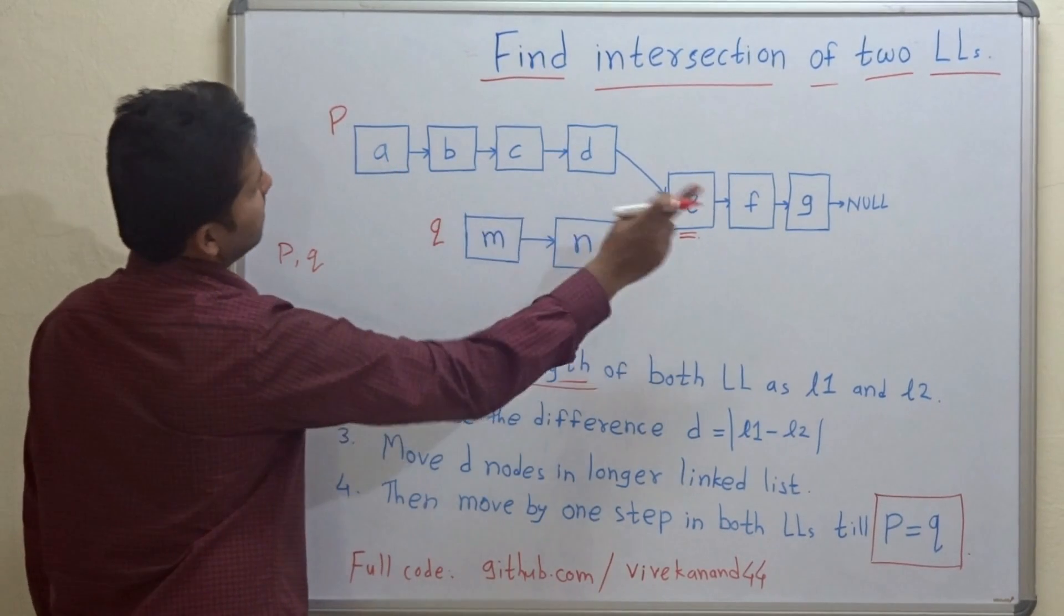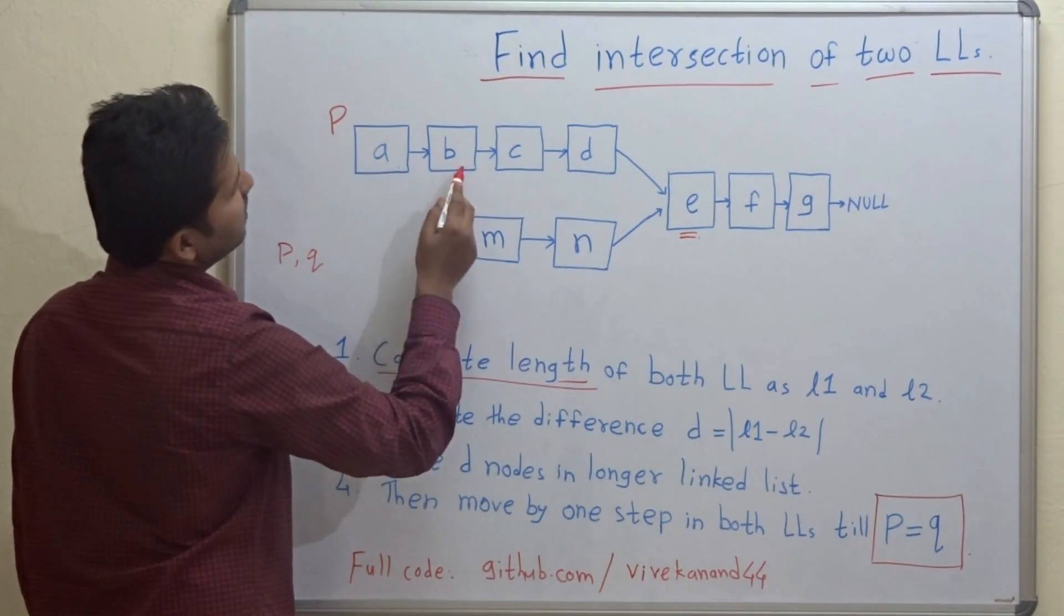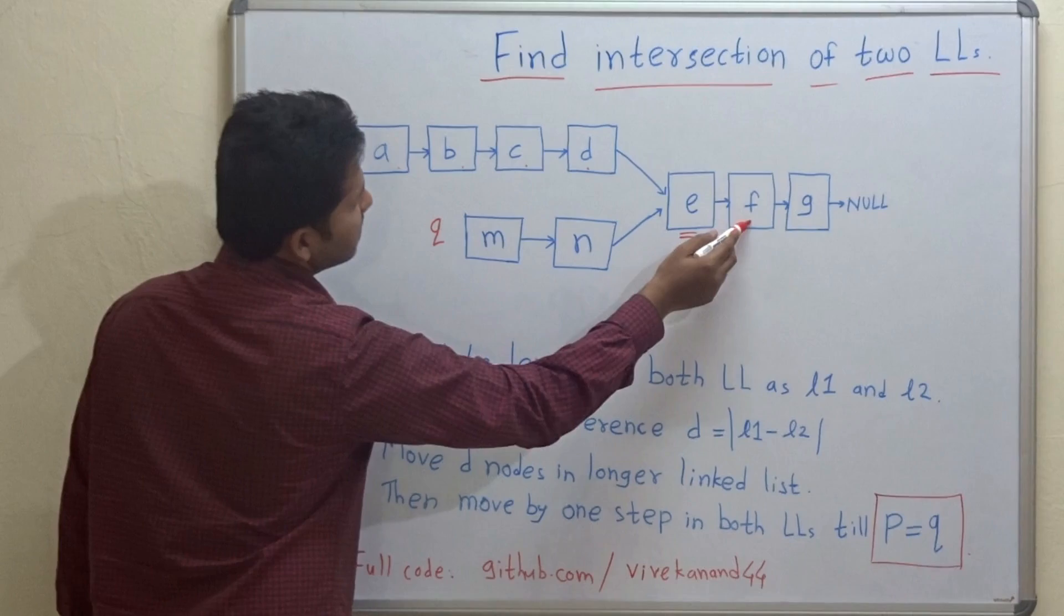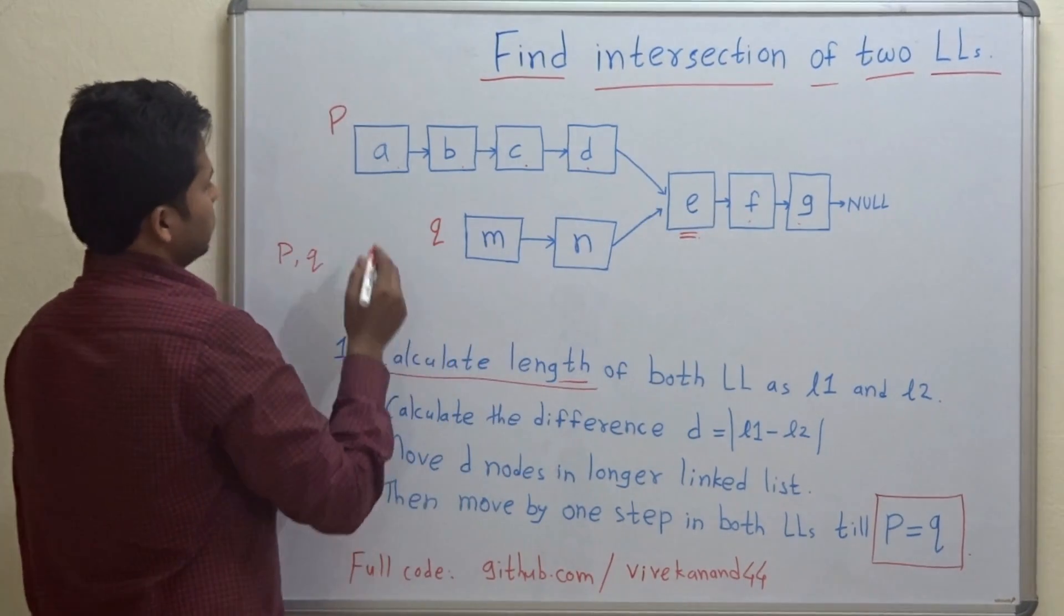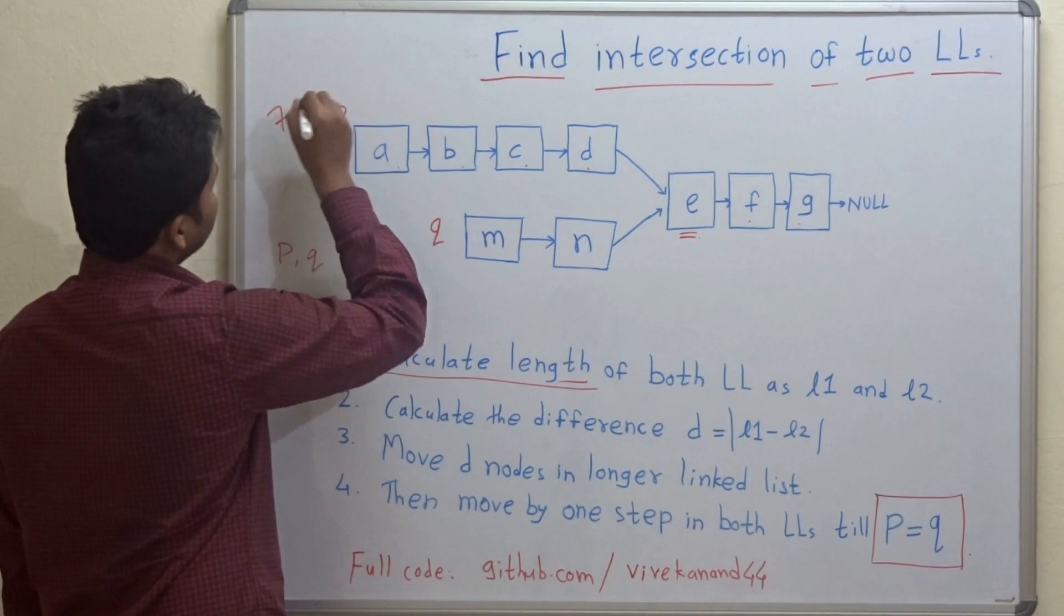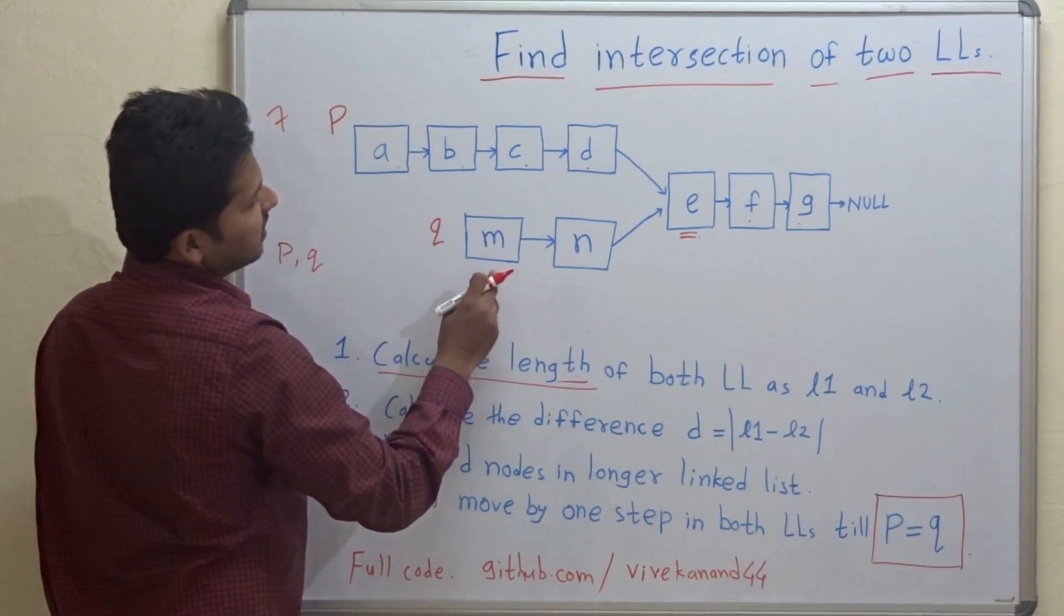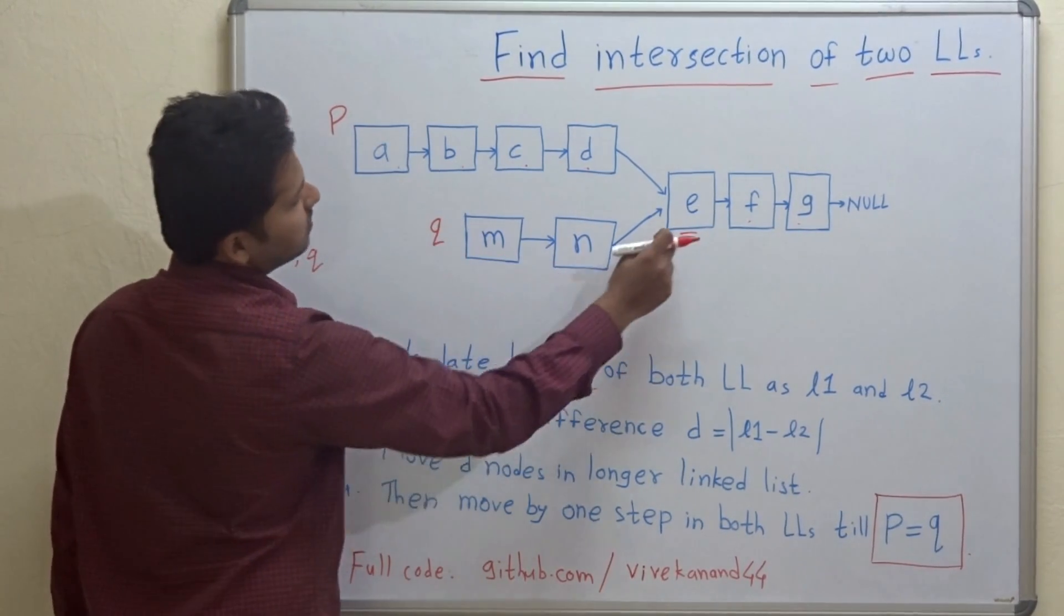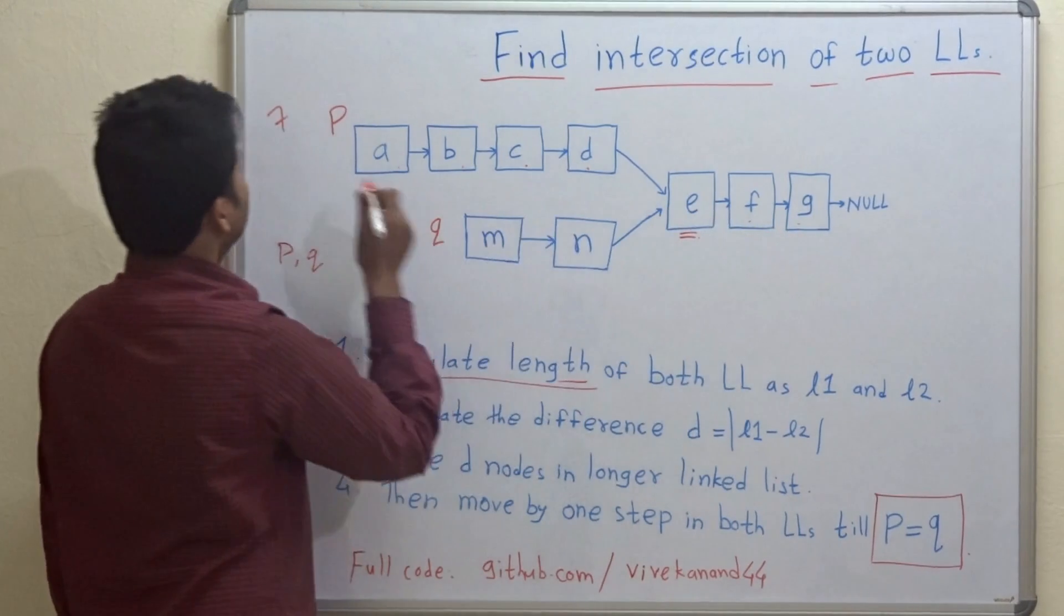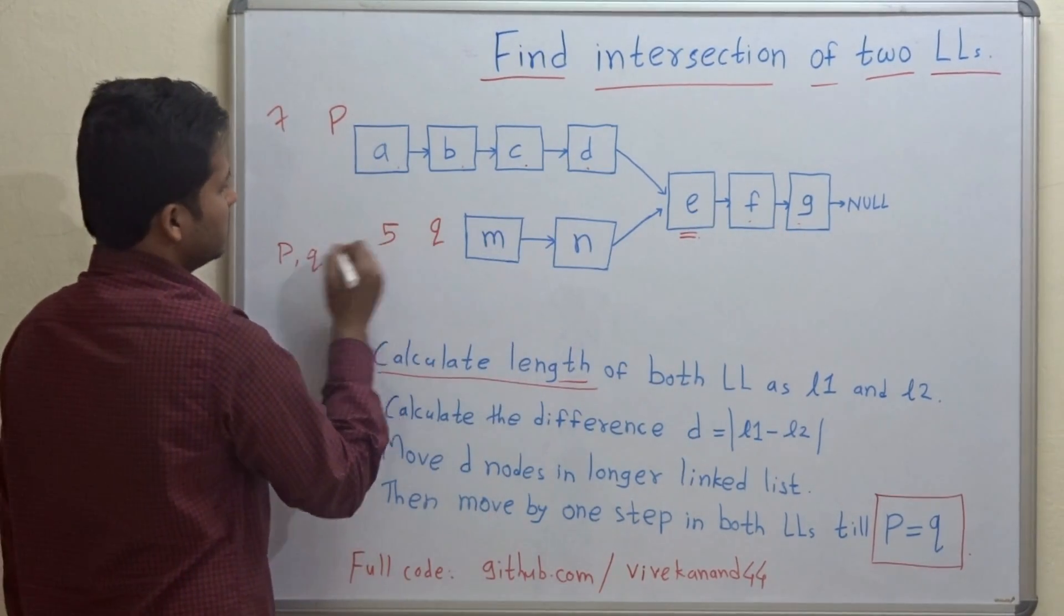For this linked list, the length will be 1, 2, 3, 4, 5, 6, 7. So 7 is the length of this linked list and for this linked list, 1, 2, 3, 4, 5. So 5 is the length of this linked list.